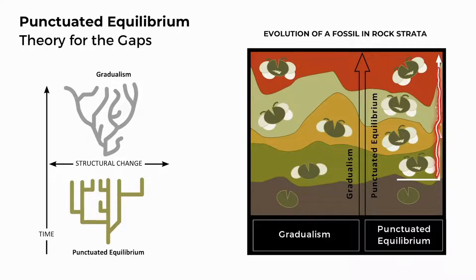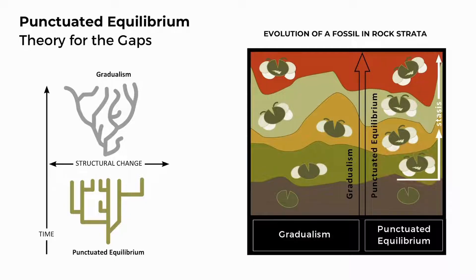The stasis or equilibrium period is proposed because Gould and Eldridge found that most fossils appear in the fossil record and disappear largely unchanged. They are stable across long time periods and easily recognized as the same organism — for example, trilobites. The sudden appearance idea is proposed because most species in the fossil record appeared all at once and fully formed, not in stages of transformation.